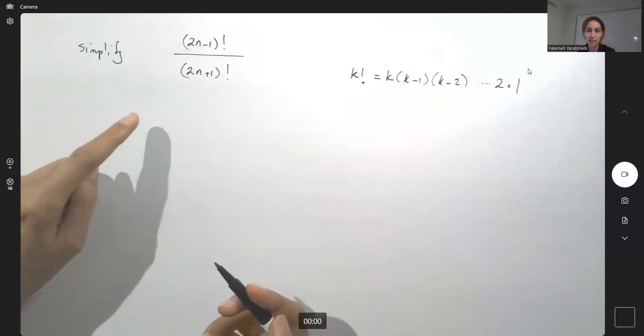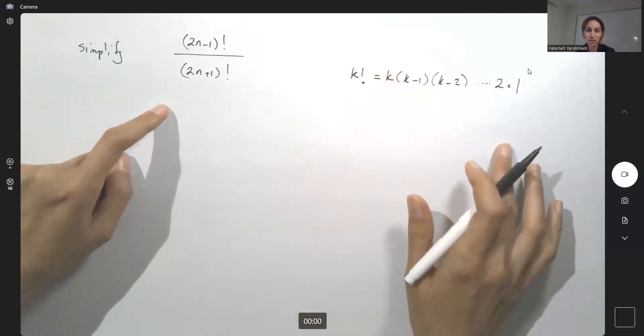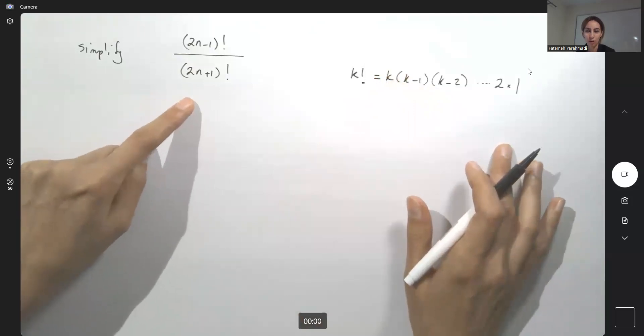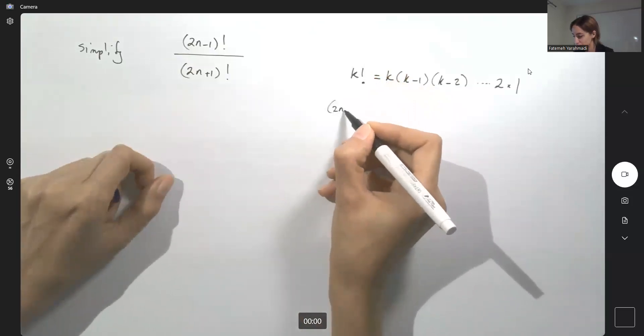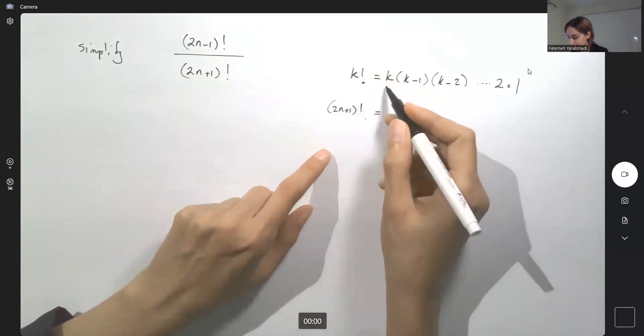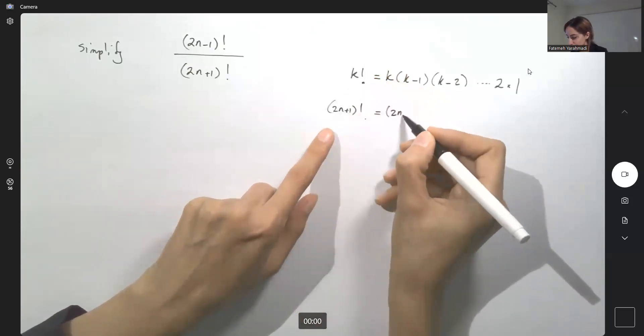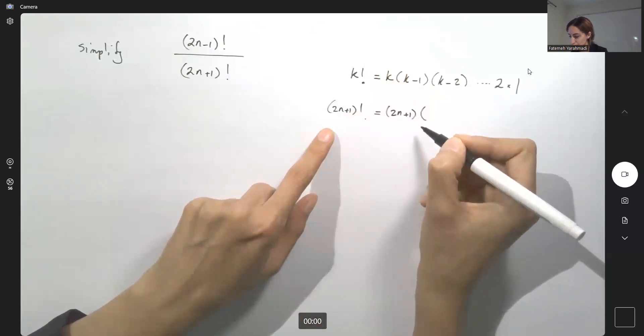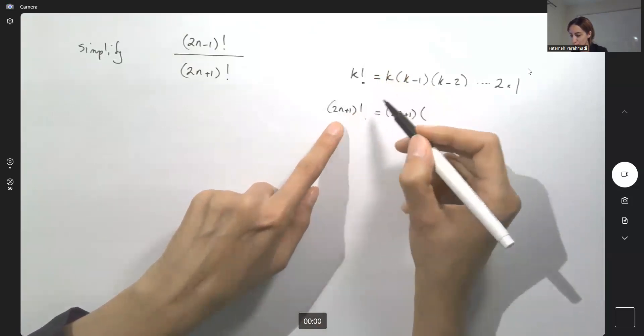So let's fit that into the definition. 2n plus 1 factorial basically is your k. It can be written as k, which is 2n plus 1, times k minus 1, 2n plus 1 minus 1,